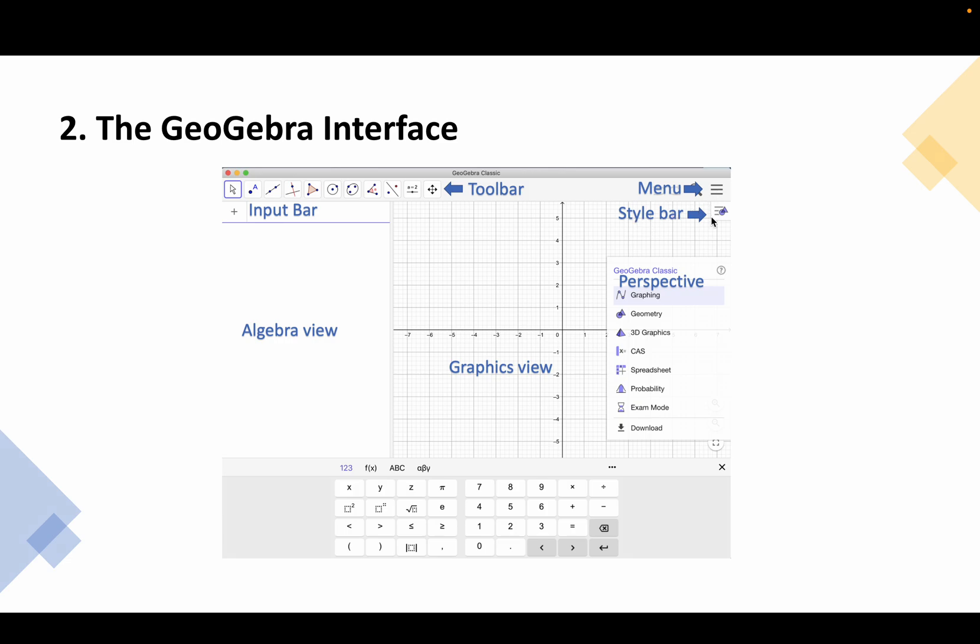And then we have the style bar here. This is where you change the properties of mathematical objects, properties and appearance. For example color, style, thickness and so on. And these are the different perspectives. If you want to do 3D graphics for example you have to go to the 3D graphics window. We will have a short demo of using GeoGebra and its interface.